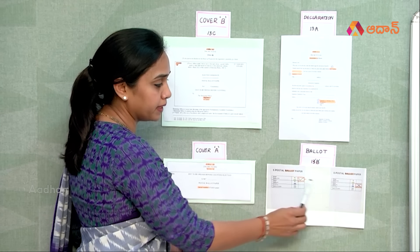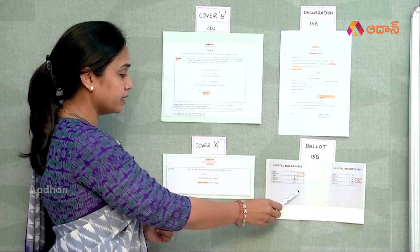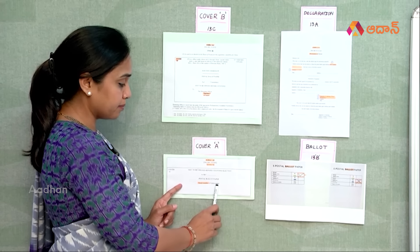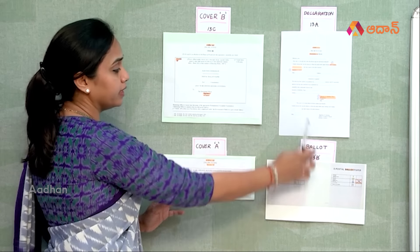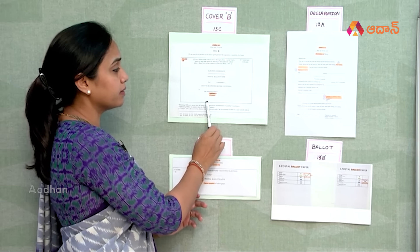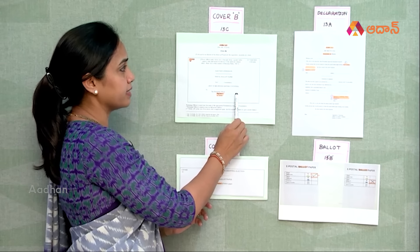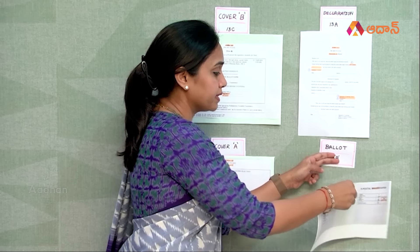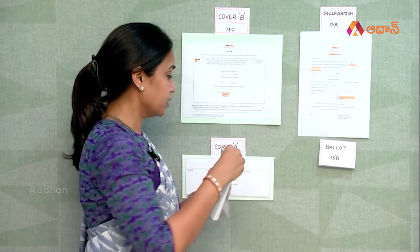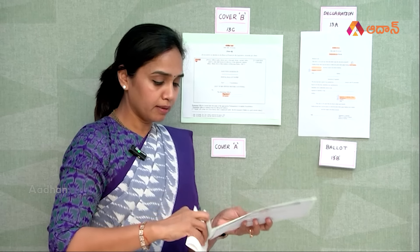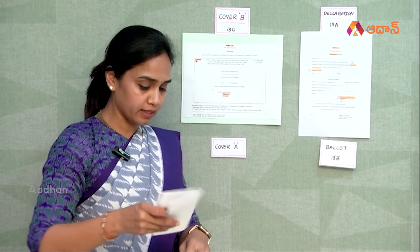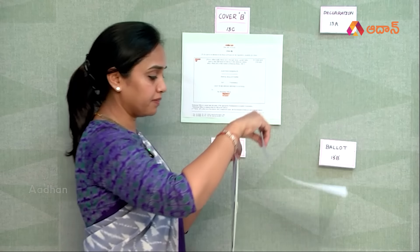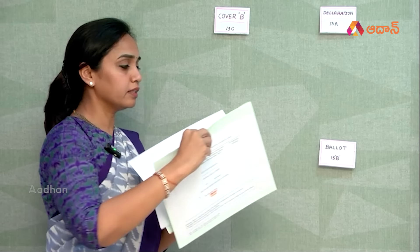Now we are going to make the ballot paper clear. We are going to give the ballot paper with the serial number. After this, we will put the signature on the ballot paper. We are going to give the ballot paper and take the ballot order. When we take the voter the ballot paper, we will send that ballot paper.